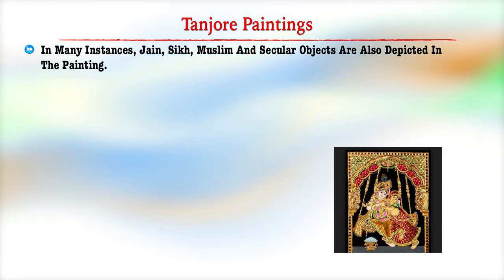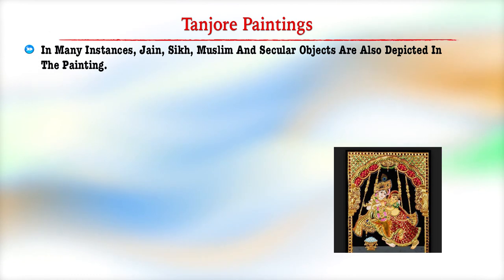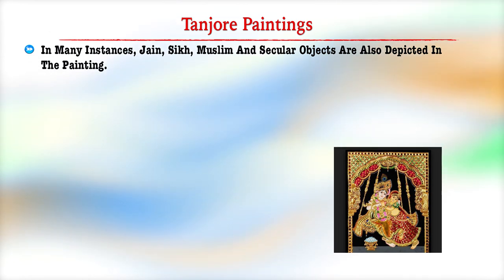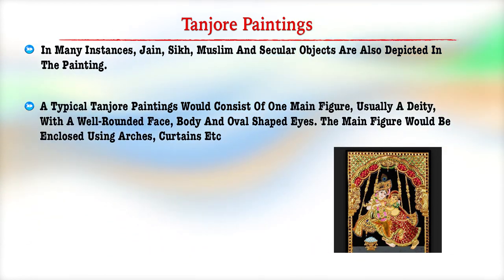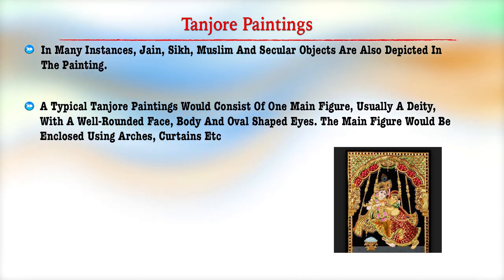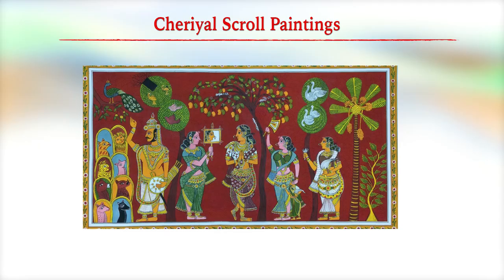In many instances, Jain, Sikh, Muslim, and secular objects are also depicted in the paintings. A typical Tanjore painting would consist of one main figure, usually a deity with a well-rounded face, body, and oval-shaped eyes. The main figure is enclosed by the painter with scenes of wars as well as devotional scenes depicted alongside.